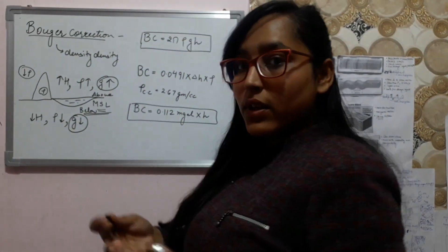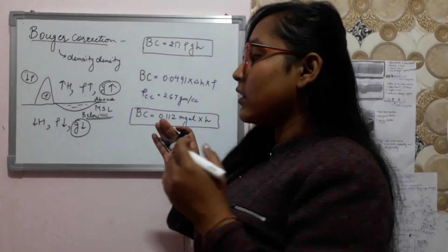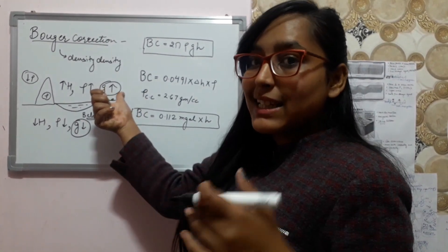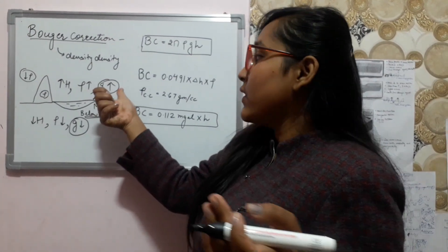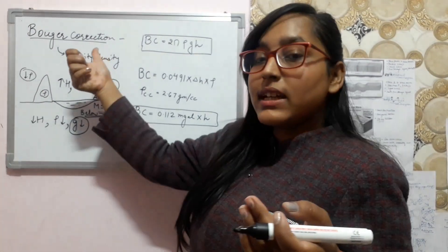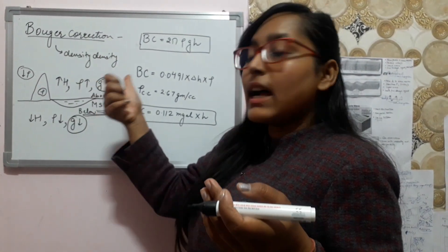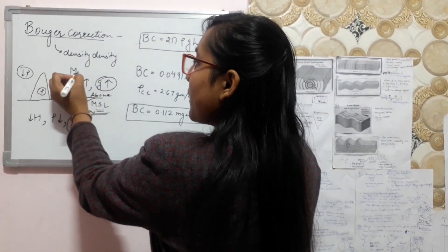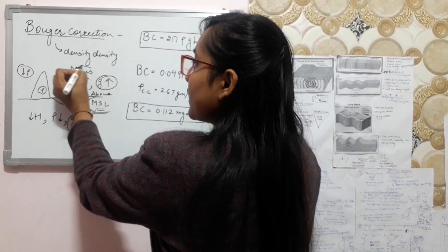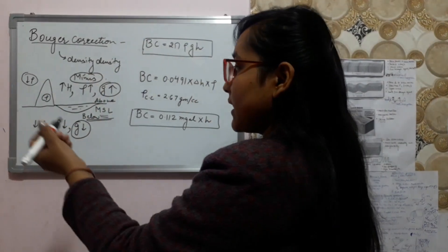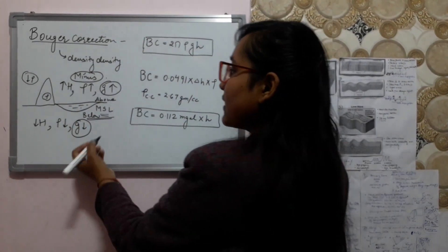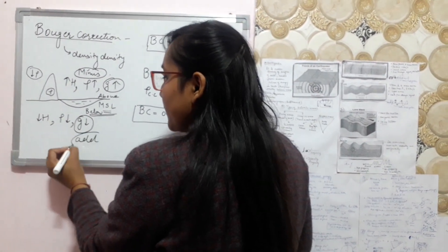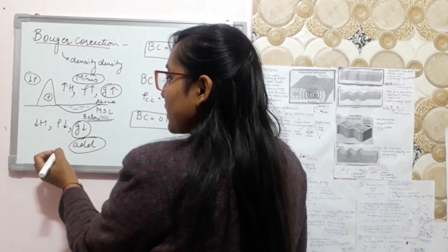As I explained for the free air correction, the same principle applies here. If gravity is increasing in that area, then for the correction we have to subtract that value. If gravity is decreasing, we will add that value for the correction.